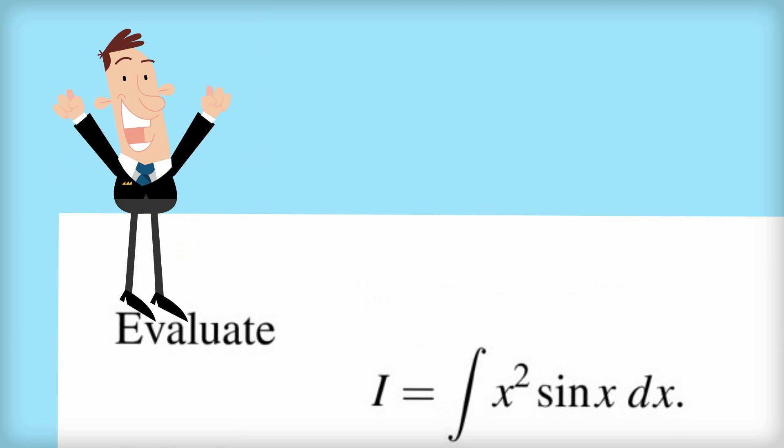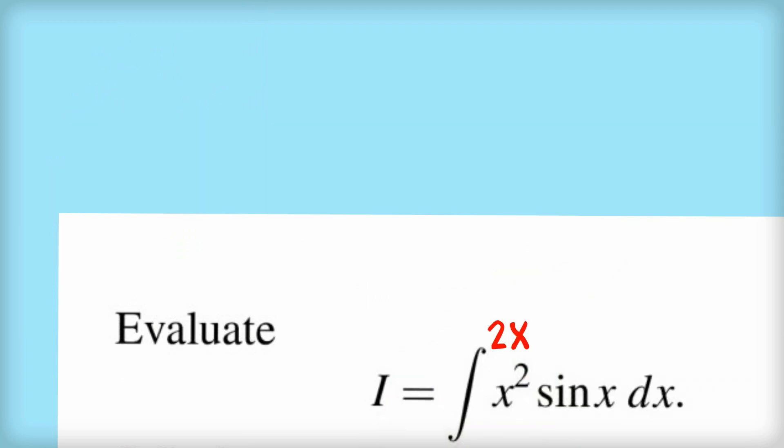So if we think like a chess player a few moves ahead here, we say if we take the derivative of x squared, we'll get 2x. Take the integral of sine x, we'll get plus or minus cos x, doesn't matter. And that integral then, 2x cos x, is going to be very similar to what we saw in the first problem. And if we then integrate that again, well the 2x is just going to go to 2 and the cos x will go to sine x, and we'll be left with a very easy integral. So let's see how this works.